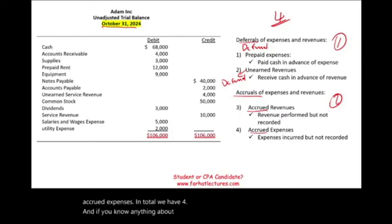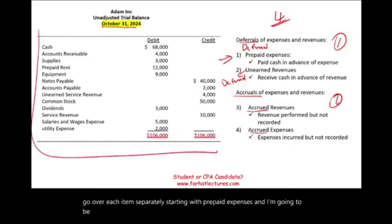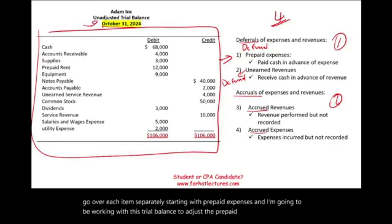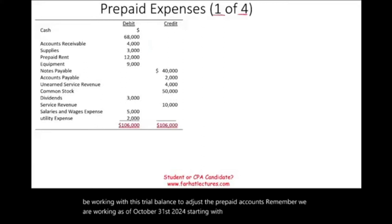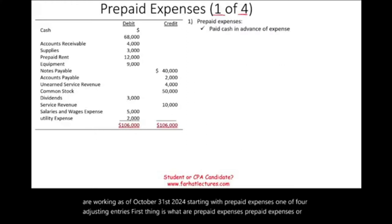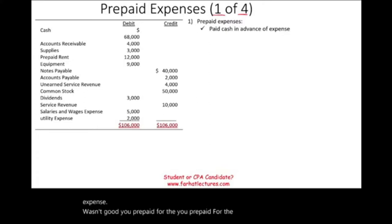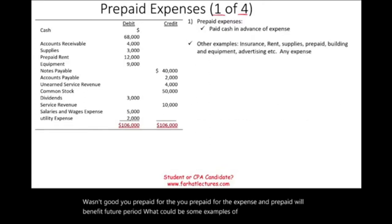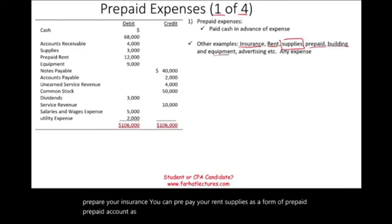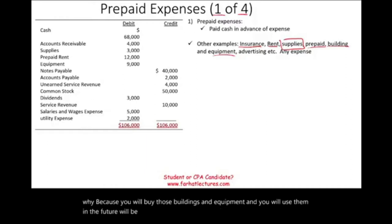I'm going to go over each item separately, starting with prepaid expenses. I'm going to be working with this trial balance to adjust the prepaid accounts as of October 31st, 2024. What are prepaid expenses? Prepaid expenses are any time you pay cash in advance of the expense — before the expense was incurred, you prepaid for it, and that prepaid will benefit a future period. Examples include prepaid insurance, prepaid rent, supplies, and even buildings and equipment.